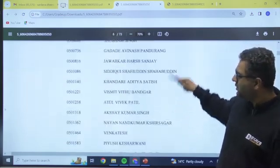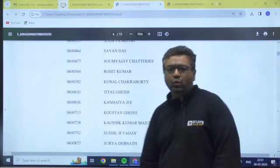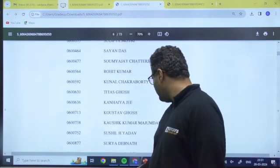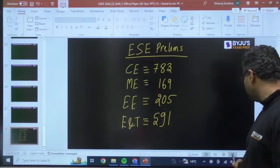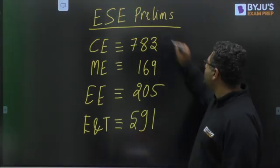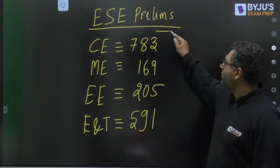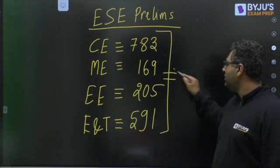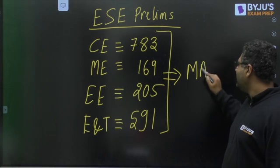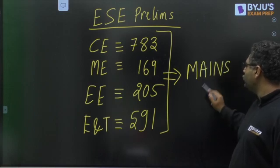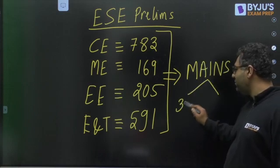Overall, if you talk about, I want to tell you that these are the total number of candidates shortlisted for the next stage, that is mains paper. These are going to appear for the mains paper. Mains paper is going to be 2 papers of 300 marks.